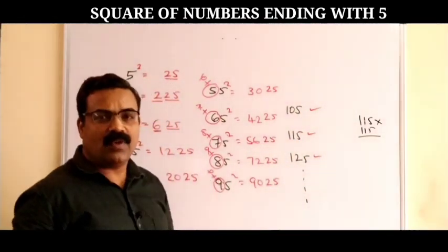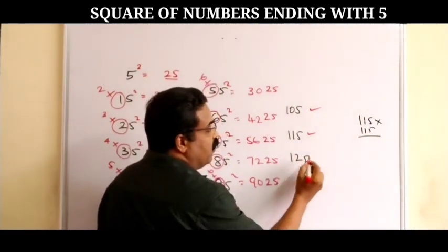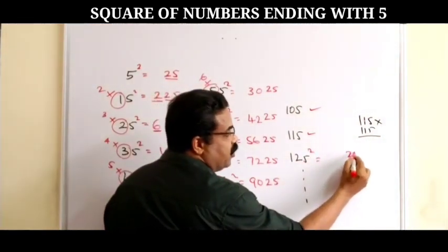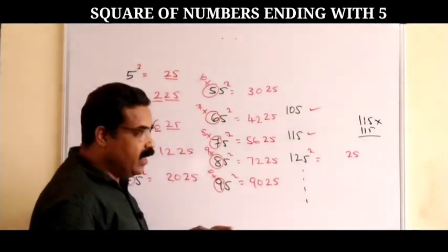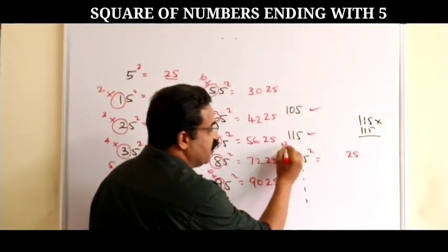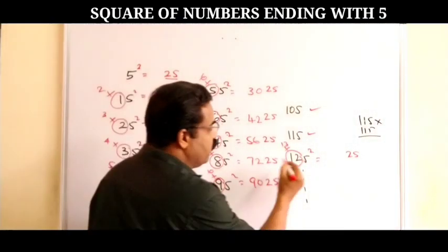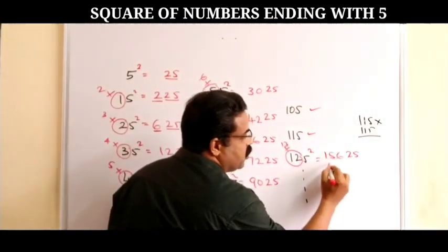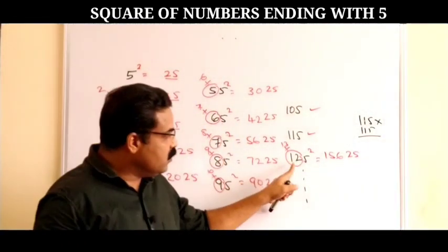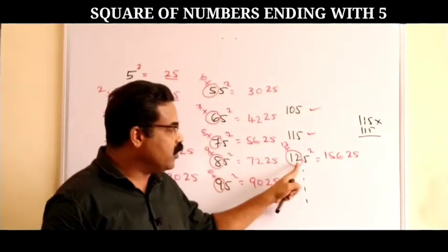For example, what is 125²? Last two digits are 25. Then take 12 (the part other than 5) and multiply by its next number 13: 12 × 13 = 156. So 125² = 15625.